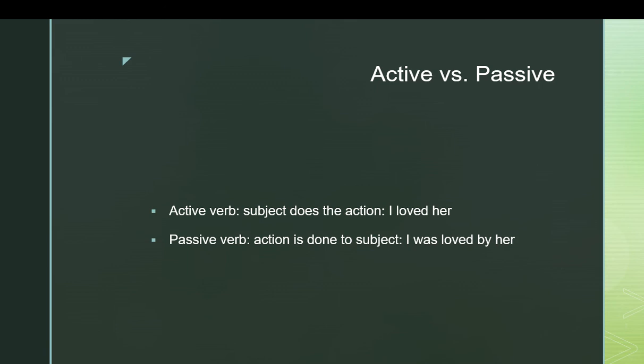One last piece of verb information to note. The active verb, which is the most common form, is when the subject does the action — 'I loved her.' The passive form, one oftentimes not used in English but perfectly grammatically legal, is when the action is being done to the grammatical subject — 'I was loved by her.' In other words, the logical recipient of the action becomes the grammatical subject, as opposed to the grammatical object being the recipient and the grammatical subject being the doer.